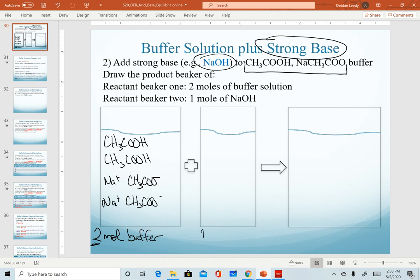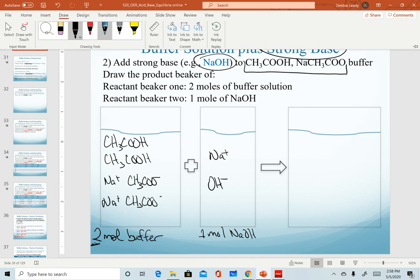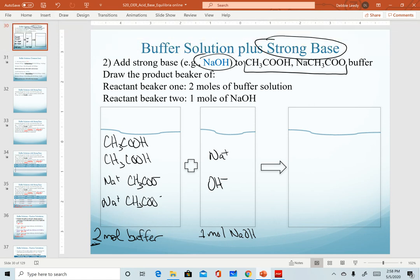Now, in the right reaction reactant beaker, we're going to put one mole of sodium hydroxide. Of course, we know that that completely dissociates. And like we did before, we now want to figure out what is the main reaction that's going to take place.